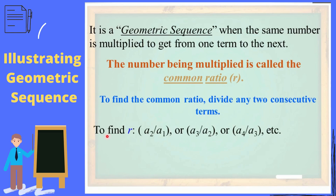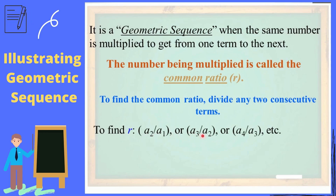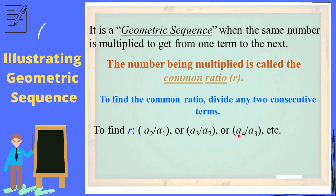So to find R: A sub 2 divided by A sub 1, or A sub 3 divided by A sub 2, or A sub 4 divided by A sub 3.